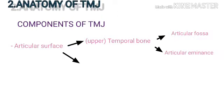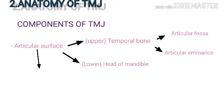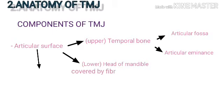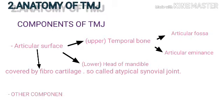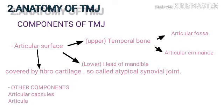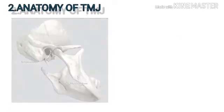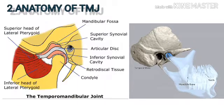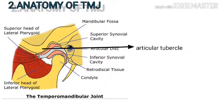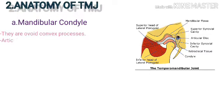Anatomy of TMJ — components: the upper articular surface is formed by the articular fossa and articular eminence of the temporal bone, while the lower articular surface is formed by the head of the mandible. Since the articular surface is covered by fibrocartilage, it is called an atypical synovial joint. Other components include the articular capsule, articular disc, ligaments, and muscles.